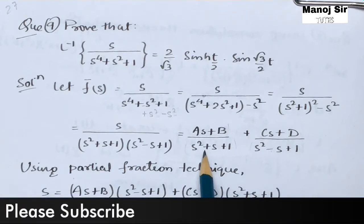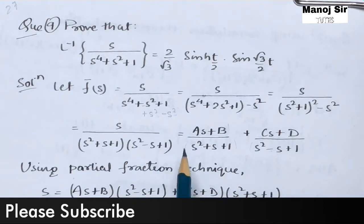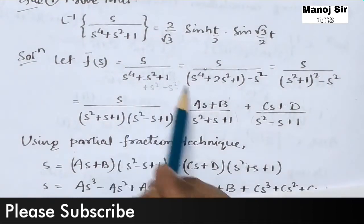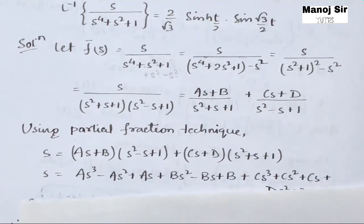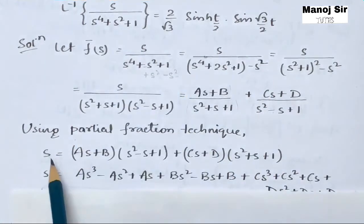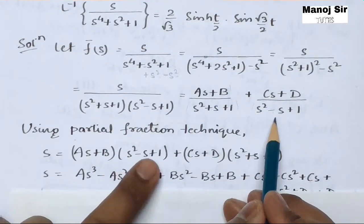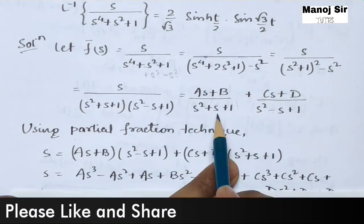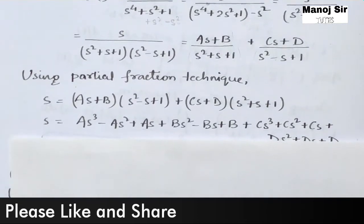Taking LCM as (s² + s + 1)(s² − s + 1) and cancelling the denominator, we equate numerators: s = (As + B)(s² − s + 1) + (Cs + D)(s² + s + 1).